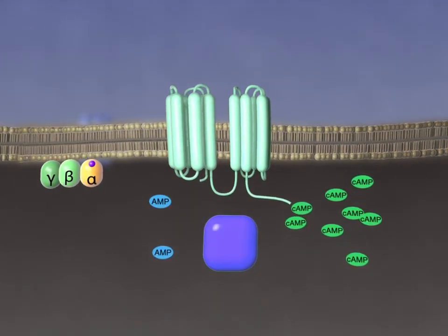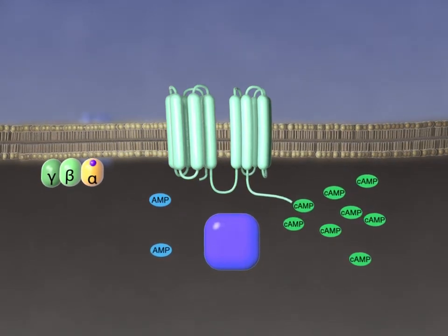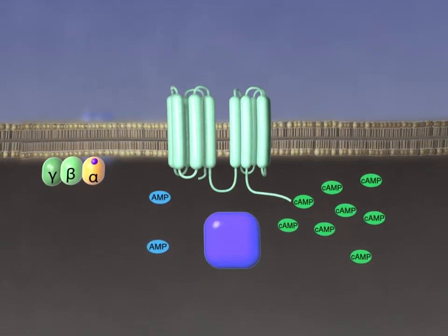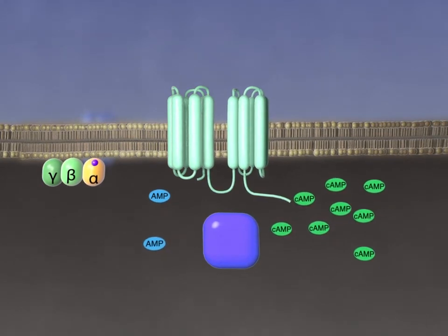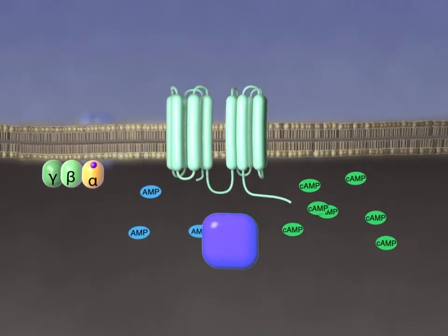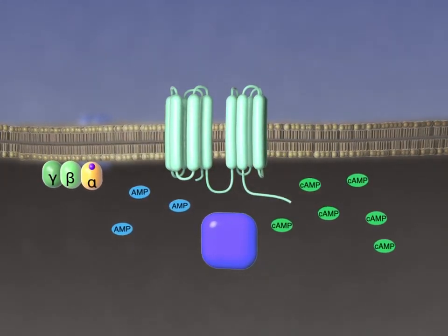Third, the cyclic AMP produced by adenylyl cyclase is rapidly hydrolyzed to AMP by phosphodiesterase enzymes in the cell.